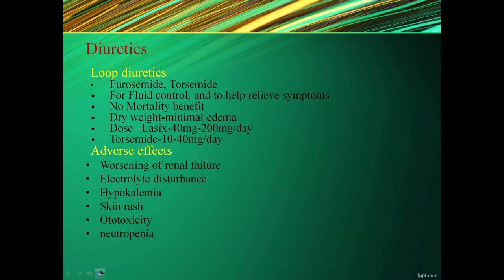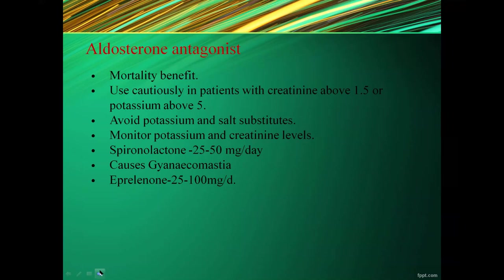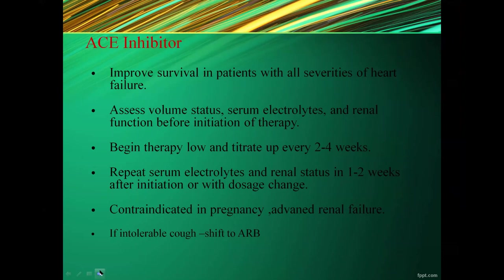Aldosterone antagonists including spironolactone and eplerenone have mortality benefit. Use cautiously in patients with creatinine above 1.5 or potassium above 5. Avoid potassium and salt substitutes; monitor sodium and creatinine levels. These drugs can cause gynecomastia. ACE inhibitors improve survival in patients with all severities of heart failure. Assess volume status, serum electrolytes, and renal function before initiation. Begin therapy low and titrate every 2–4 weeks; repeat labs 1–2 weeks after initiation or dose changes. Contraindicated in pregnancy and advanced renal failure. If ACE inhibitor cough or side effects occur, switch to ARBs.